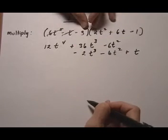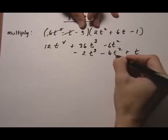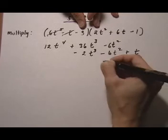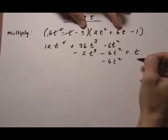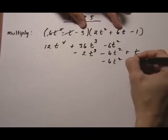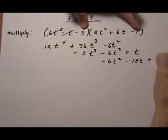Now we go to minus 3. Minus 3 times 2t squared is minus 6t squared. So that would line up under these guys. Minus 3 times 6t is minus 18t, which would line up right here. Minus 3 times minus 1 would be plus 3.